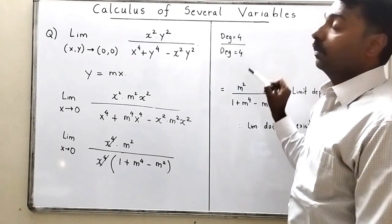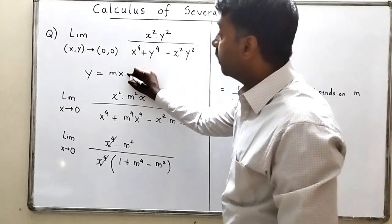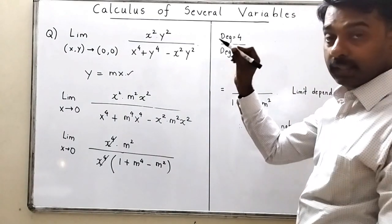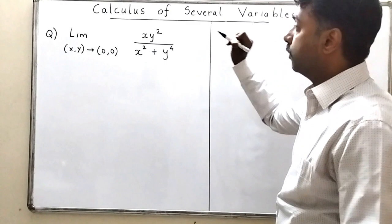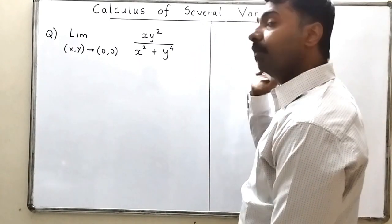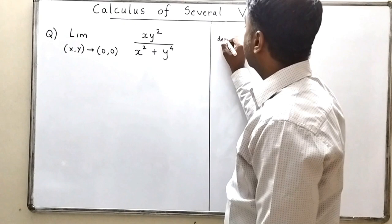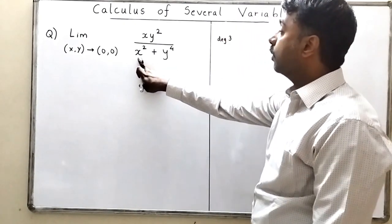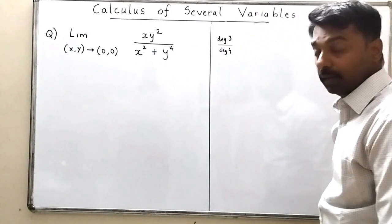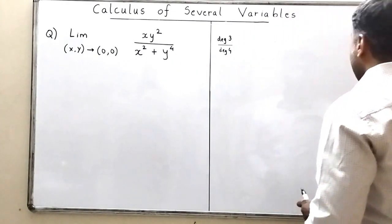Sometimes the degrees are not equal, and you need a different approach. Consider: limit of xy²/(x² + y⁴). The numerator has degree 1 + 2 = 3, while the denominator has highest degree 4. Since there is a mismatch, you cannot use the y = mx substitution.